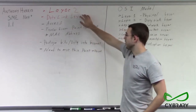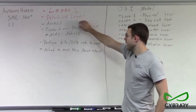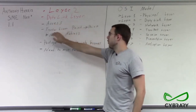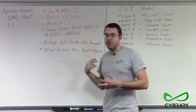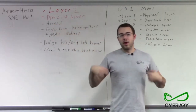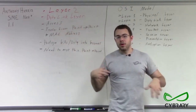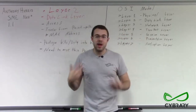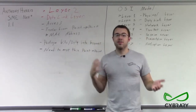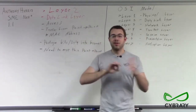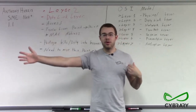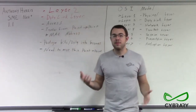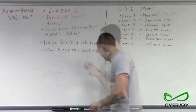Our layer two data link layer is about access. It's going to be a transfer from point to point. Whereas further layers that we'll move on to with networking may involve the transfer of data across multiple networks, our layer two connectivity is going to be from point A to point B.